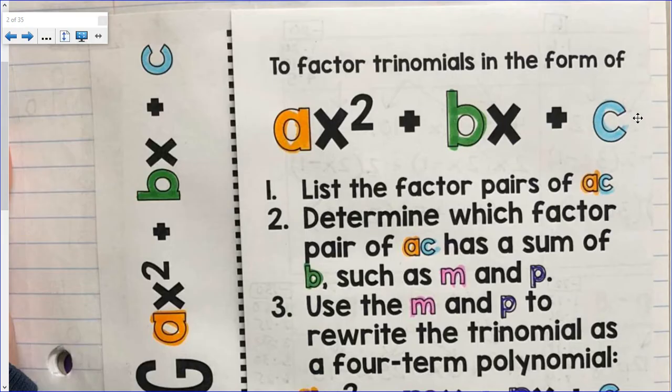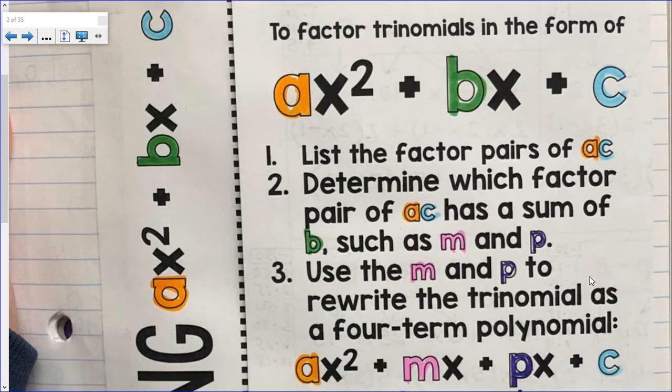Kind of very similar to factoring a trinomial where a was 1, you're just looking at what factor pairs of c multiply to get c but add up to get b. Now I'm doing a times c, and I'm taking that answer, and I'm seeing what factor pairs of ac give me a sum of b. Now let's say I find those values, I'm going to call them m and p.